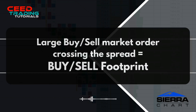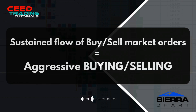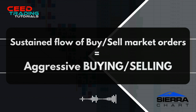Before adding the indicators to the chart, let's define the output for visualizing large market orders crossing the spread at individual price points as buy or sell footprints, and the sustained use of either buy or sell market orders on one side of the market over the period of an entire candle as aggressive buying and selling.